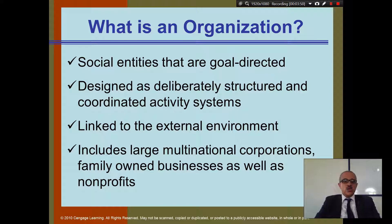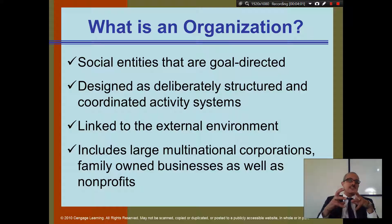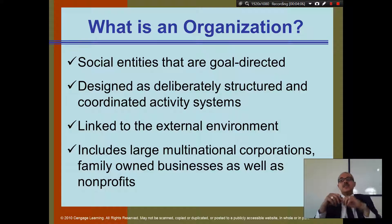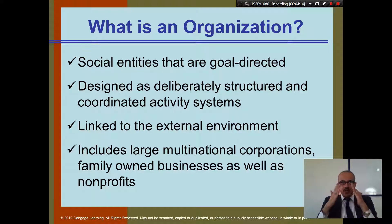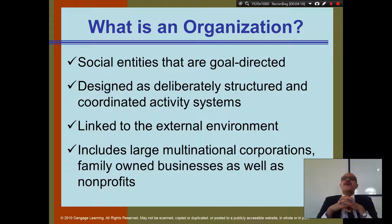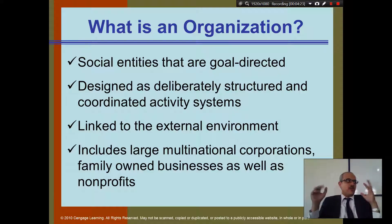Next, we will talk about what an organization is. An organization is basically a social entity that is goal-directed. Goal-directed means you always focus on the goal — you can't have an organization with no goal. We want all people to have one goal. Number two, we need a deliberately structured and coordinated activity system. We don't want the marketing department going in one direction and operations in another. We want them to coordinate with each other so they go in the same direction.